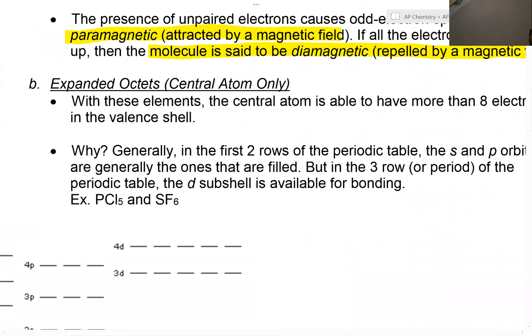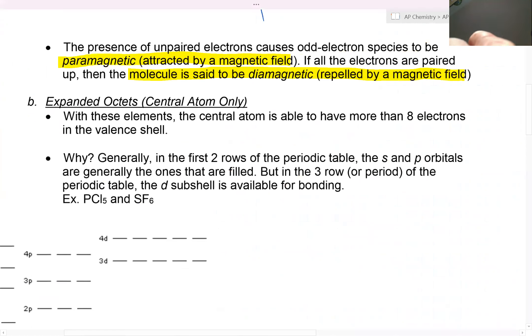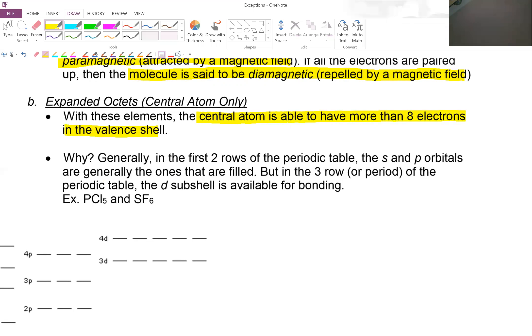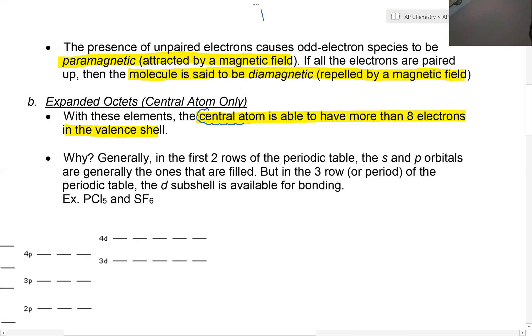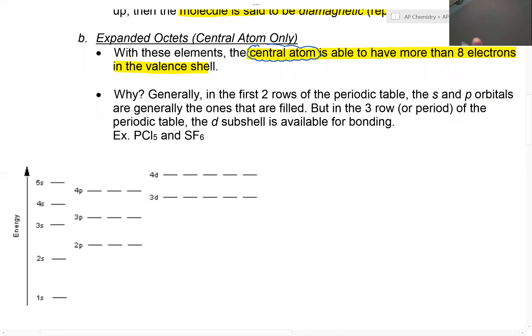Another exception is expanded octets. In this case what happens is the central atom is able to have more than eight electrons in the valence shell. The key word here is the central atom. Why are sometimes the central atom able to have more than eight electrons? Generally, in the first two rows of the periodic table, the S and P orbitals are the ones that are filled. But in the third row or third period of the periodic table, the D sub shell is available for bonding.